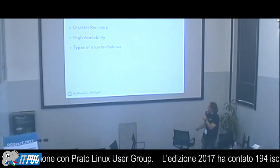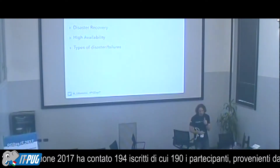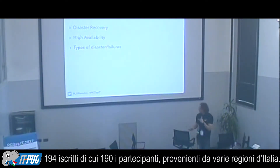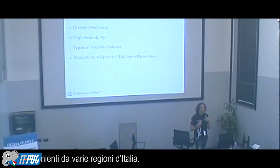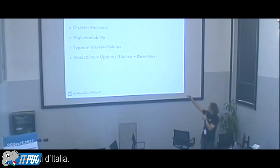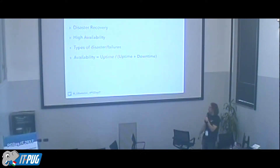Failures and disasters we think about include hardware failures, security holes, human errors, and natural disasters. When we talk about availability, it's actually a metric: uptime divided by the sum of uptime and downtime. You've probably heard of the five nines — 99.999% uptime over a certain period of time.